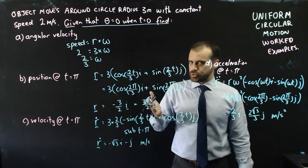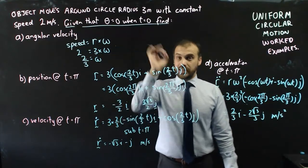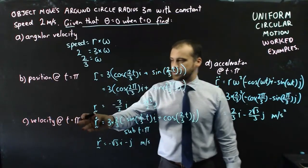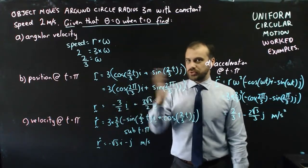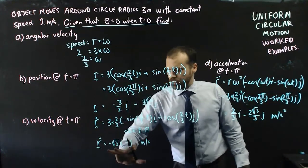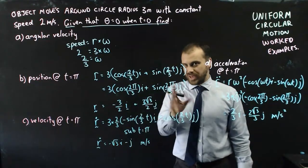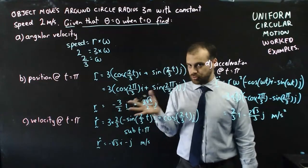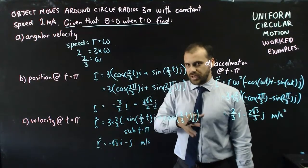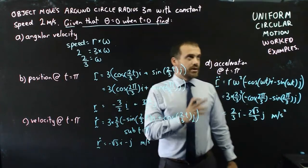If you want to consider angles of release — say we let the object go at t equals pi and wanted to know what direction it was moving in — you simply find what direction the velocity vector is pointing in, then find the angle that vector is making, and that gives you the angle of release.